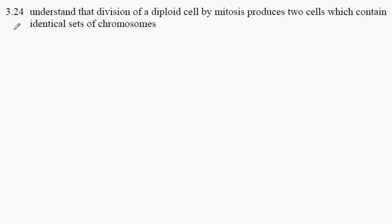IGCSE Biology, Syllabus Statement 324. Here we're looking at the process known as mitosis, which is a form of cell division which results in growth. And that growth occurs by an increase in the number of cells.